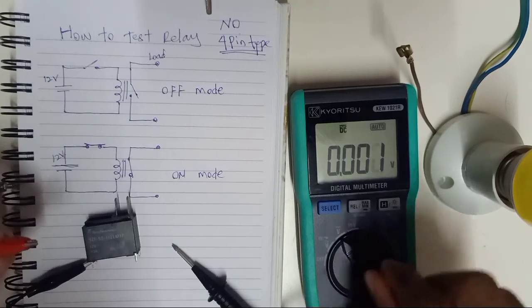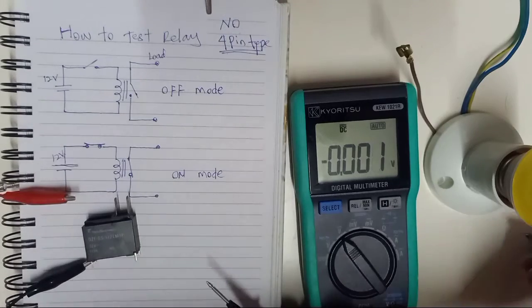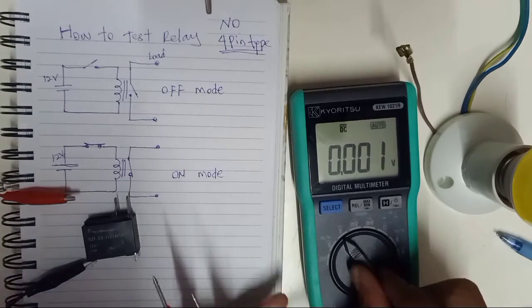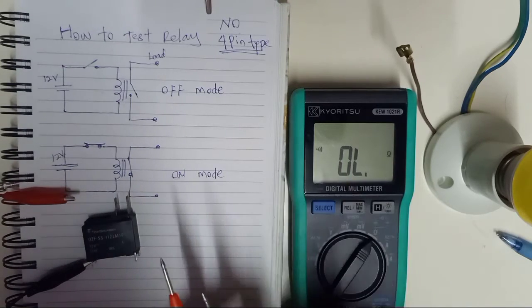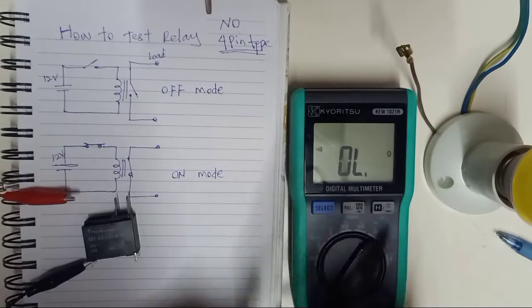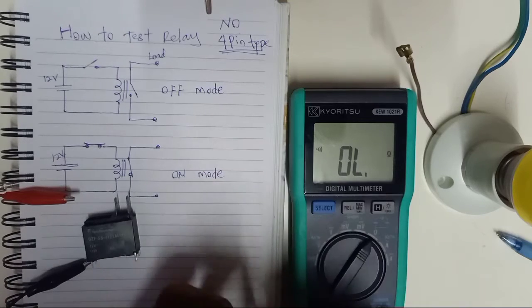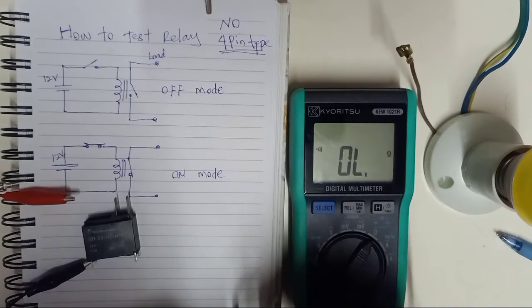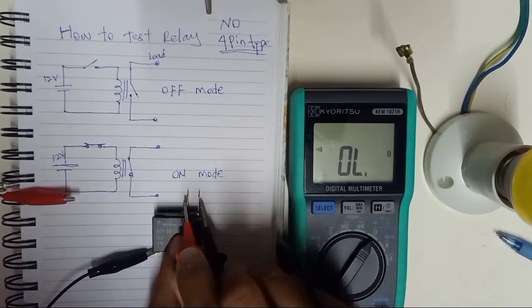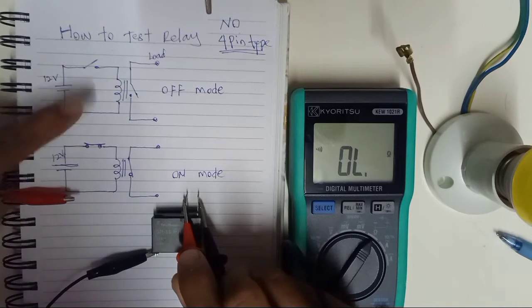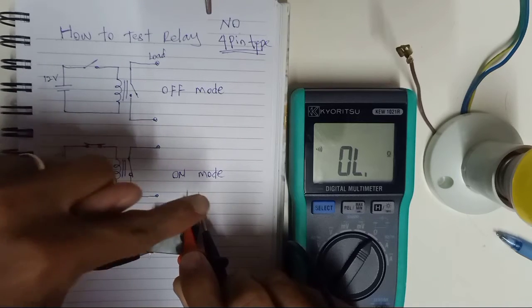Now we're going to test with the multimeter. Take your multimeter and select the buzzer mode. So now, this is the loop. It's open mode. Right now it's off mode here, so not conducting. That's why it's open and the buzzer has no sound.